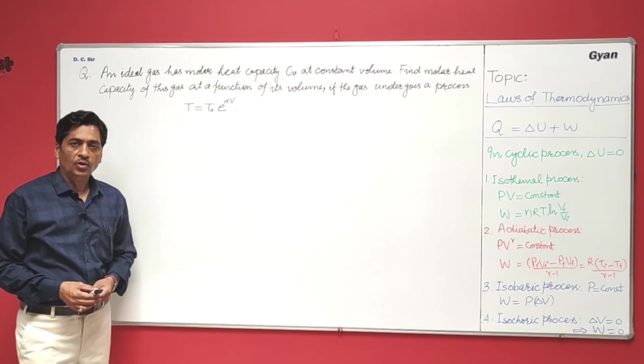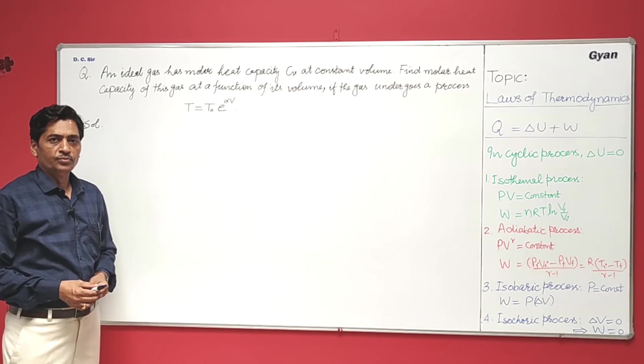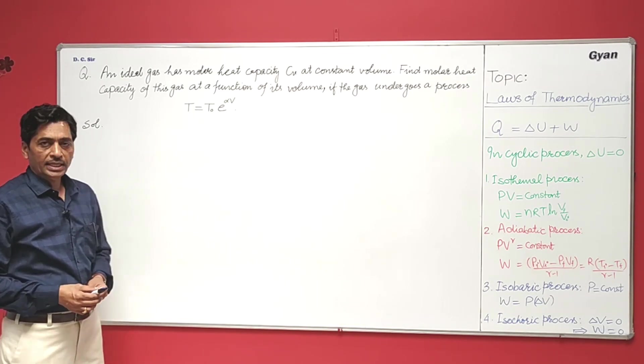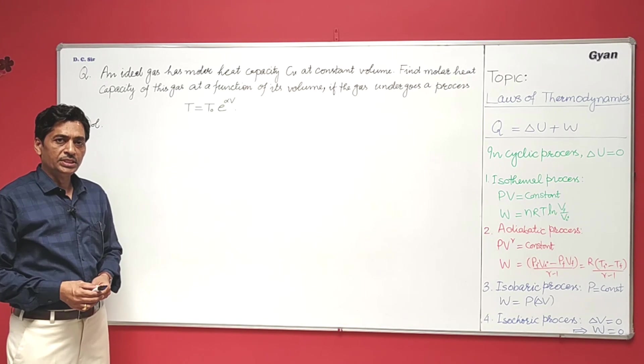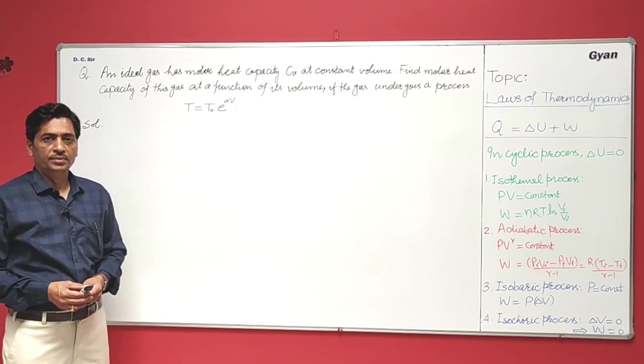Find molar heat capacity of the gas as a function of volume, if the gas undergoes a process T equals T₀ e to the power alpha V.